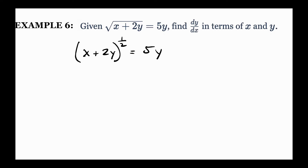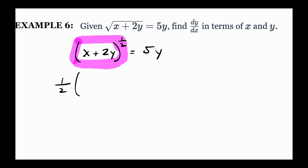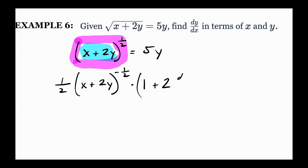This is the outside part of my chain rule. I find the derivative of that: one-half to the front, everything else stays the same, subtract one whole power. Now find the derivative of the inside: derivative of x is just one, plus the derivative of 2y is two — but it has to have a dy/dx tag since it's the derivative of y. Equals the derivative of 5y, which is five with a dy/dx tag.